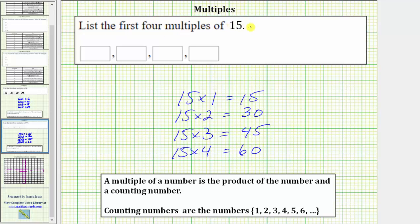The first four multiples of 15 are 15, 30, 45, 60.